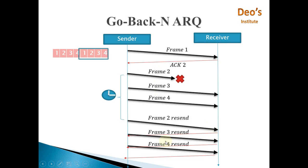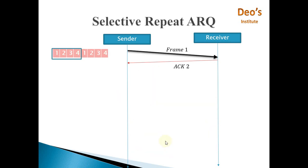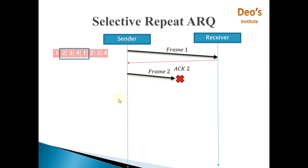To overcome this, there is the next protocol called selective repeat ARQ. In selective repeat ARQ, only the lost frame needs to be resent. Sender sends frame 1 and receiver acknowledges it with acknowledgement 2. Now suppose frame 2 is lost. Again it is a sliding window protocol, so without waiting for frame 2's acknowledgement, the sender sends frame 3.